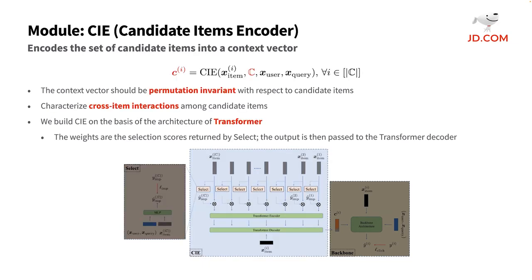The Candidate Items Encoder, or CIE module, is the core component of our CRM framework. It encodes the set of candidate items into a context vector for each candidate item — that is, the target item — for the downstream modules. Since CIE aims to encode the set of candidate items, it is a reasonable inductive bias that the output of CIE, that is the context vector, should not change with the order of the candidate items. In other words, the context vector should be permutation invariant with respect to candidate items. Moreover, CIE should also characterize cross-item interactions among candidate items, especially the interactions between the target item and the other candidate items, in order to capture comparison patterns.